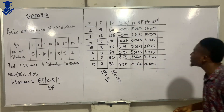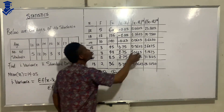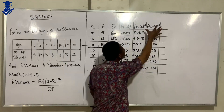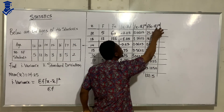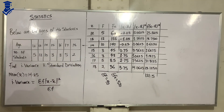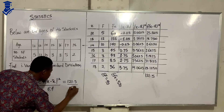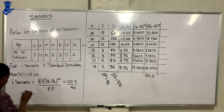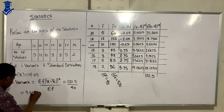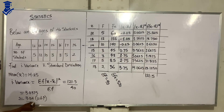Next, we find the summation of all f times (x minus x̄) squared values, because the formula for variance requires that summation. Adding all of them gives 121.5. So our variance is 121.5 divided by the summation of f, which is 40. That gives 3.0375, which is approximately 3.04 to 2 decimal places.